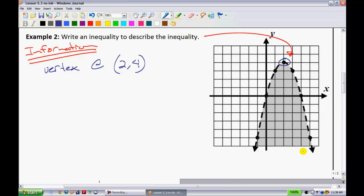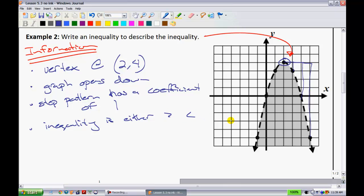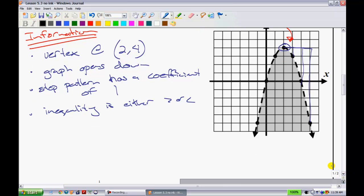What else do we know about this thing? Well, I'm noticing that the graph is opening down. So we have two points so far. Graph opens down. And what does that tell you? That tells you that the leading coefficient in front of my x squared term will be negative. Let's see. Let's talk about the step pattern. Notice how it goes over 1, down 1, and then over 2, down 4, and then over 3, down 9, like so. So we know that the step pattern has a coefficient of 1. And of course, since it's opening down, it'll actually be negative 1. And what else do we notice? Notice the line. Since we see that it has a hash line like that, we can say that the inequality is either greater than or less than, like so.